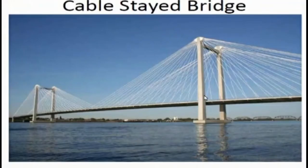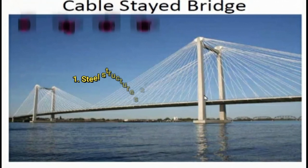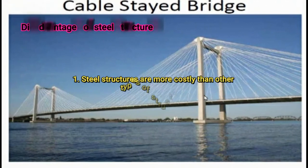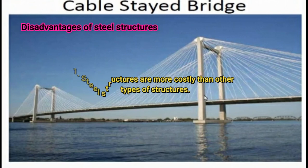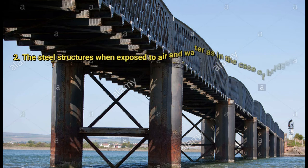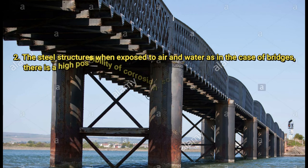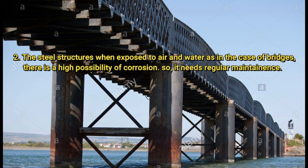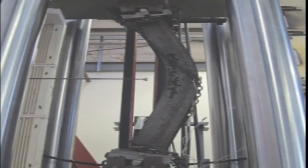Now let us talk about the disadvantages of steel structure. The first point is steel structures are more costly than other types of structures. The second disadvantage is that steel structures, when exposed to air and water as in the case of bridges, have a high possibility of corrosion, so they require regular maintenance.